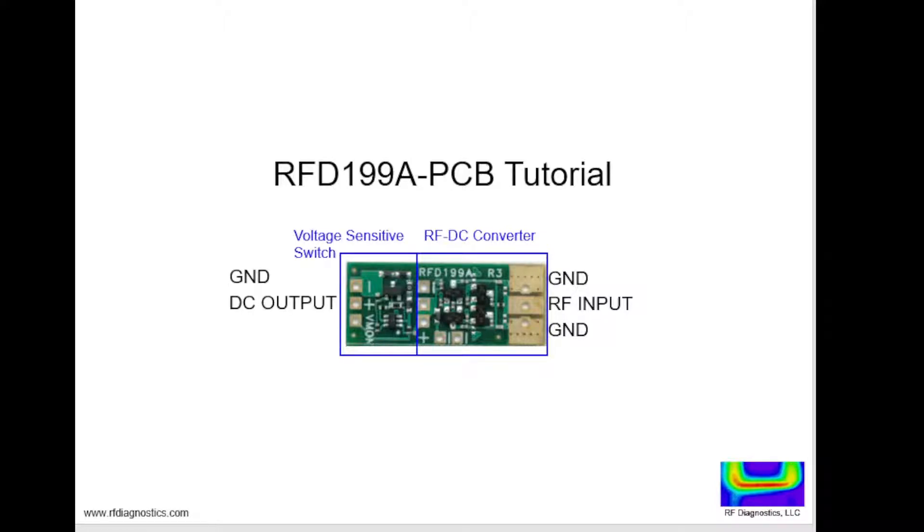On the left side of the design is a voltage sensitive switch that will turn on when the RF to DC converter output voltage reaches 5.3 volts and it will turn off when the output reaches 4.2 volts.